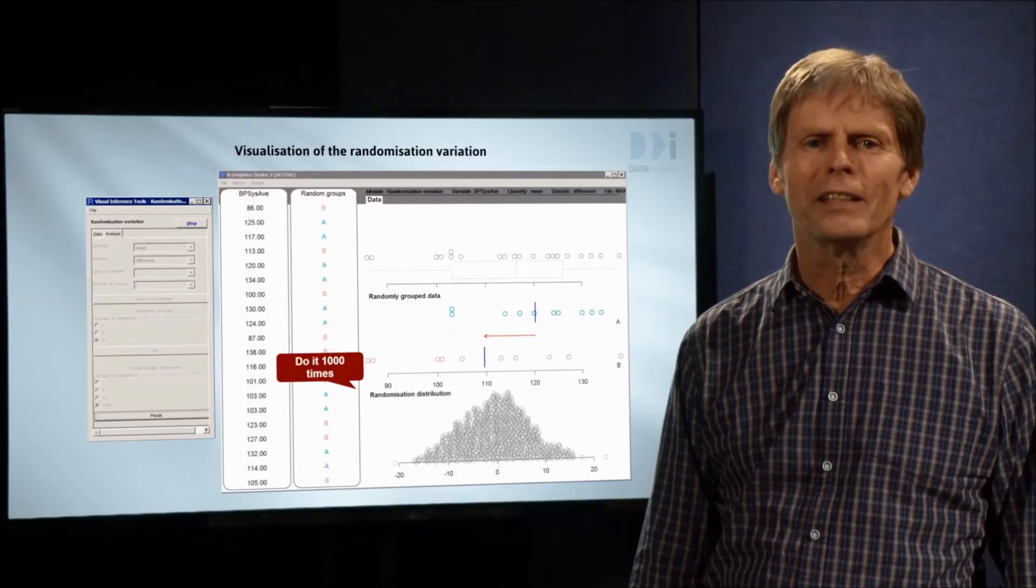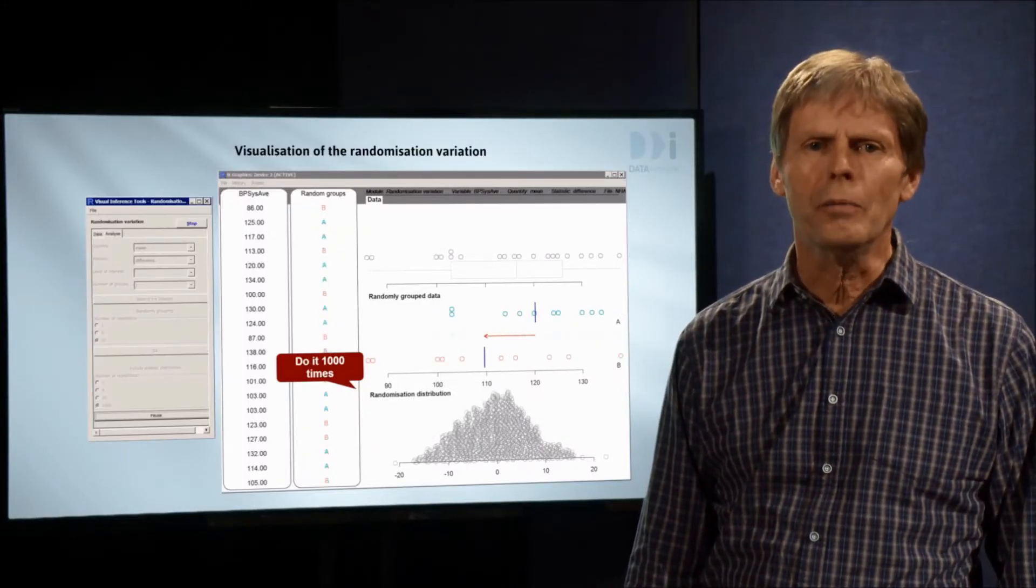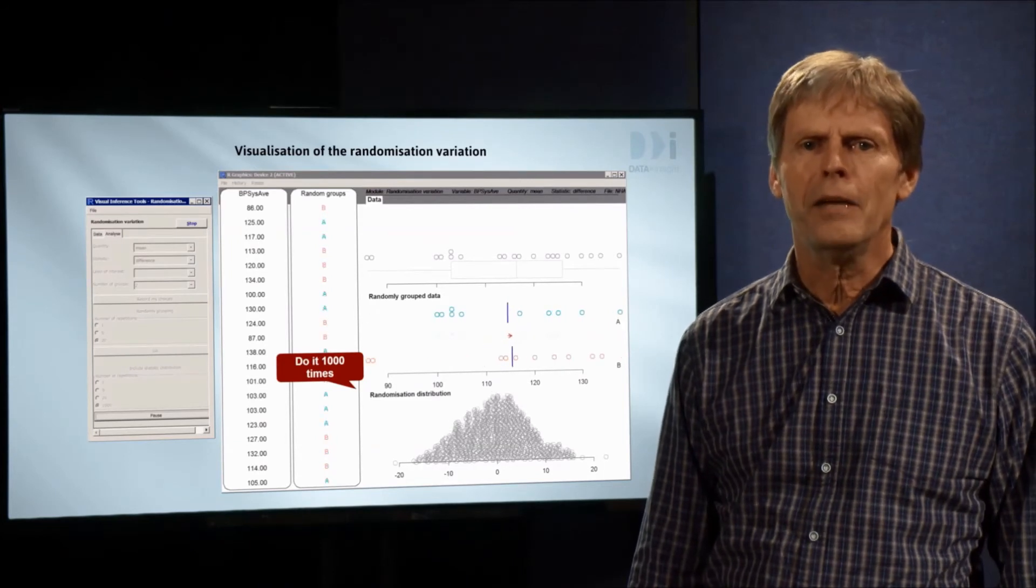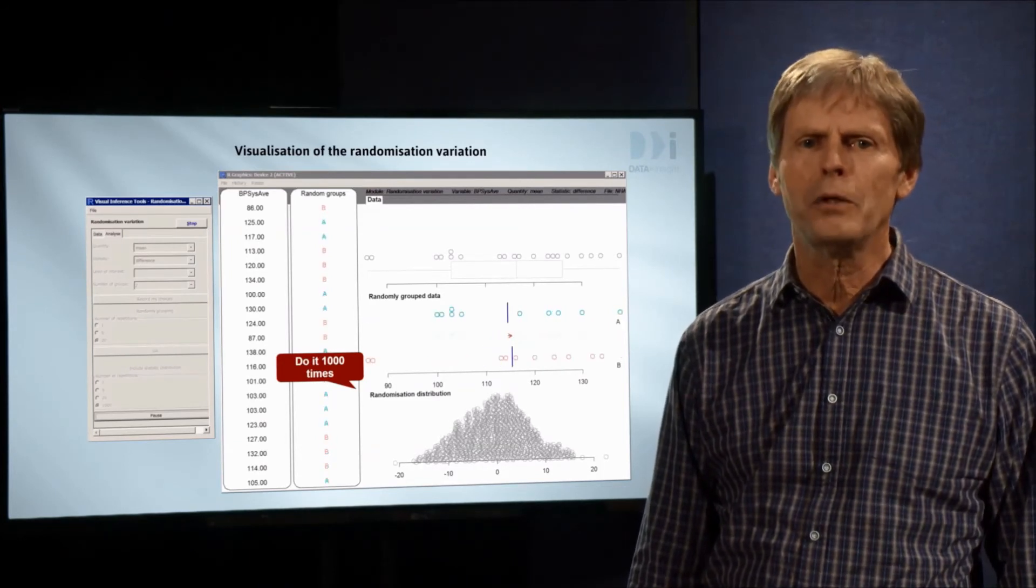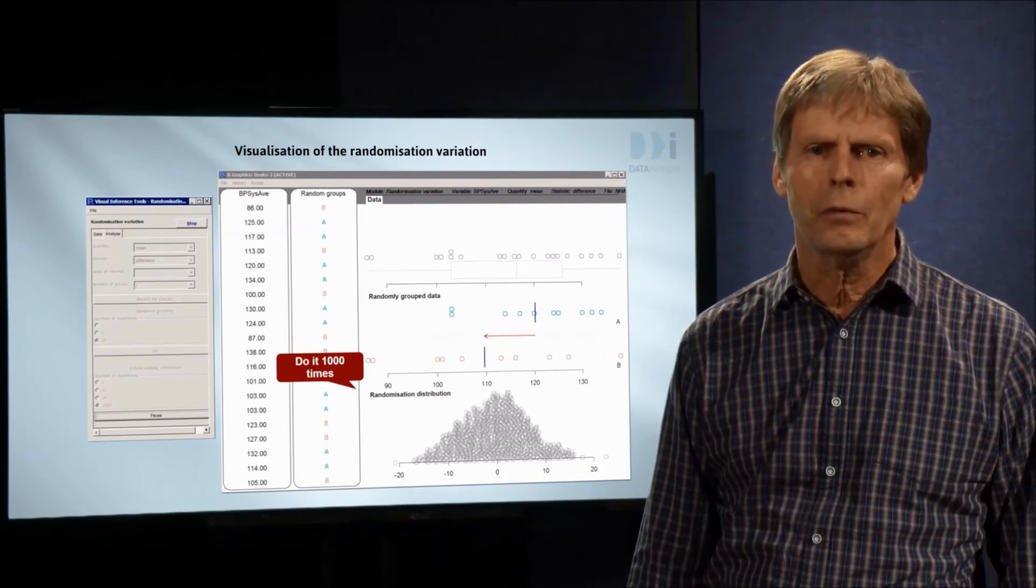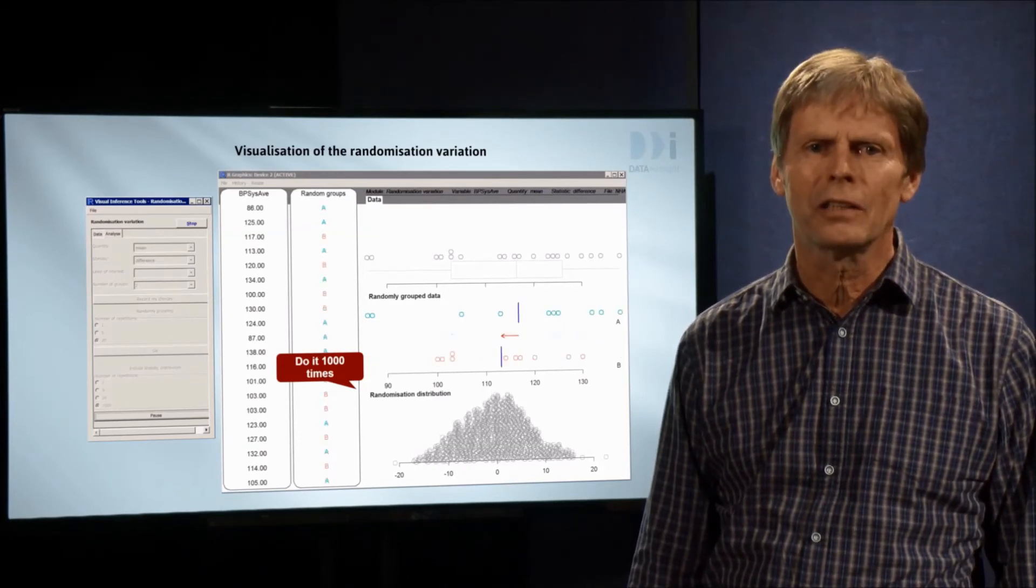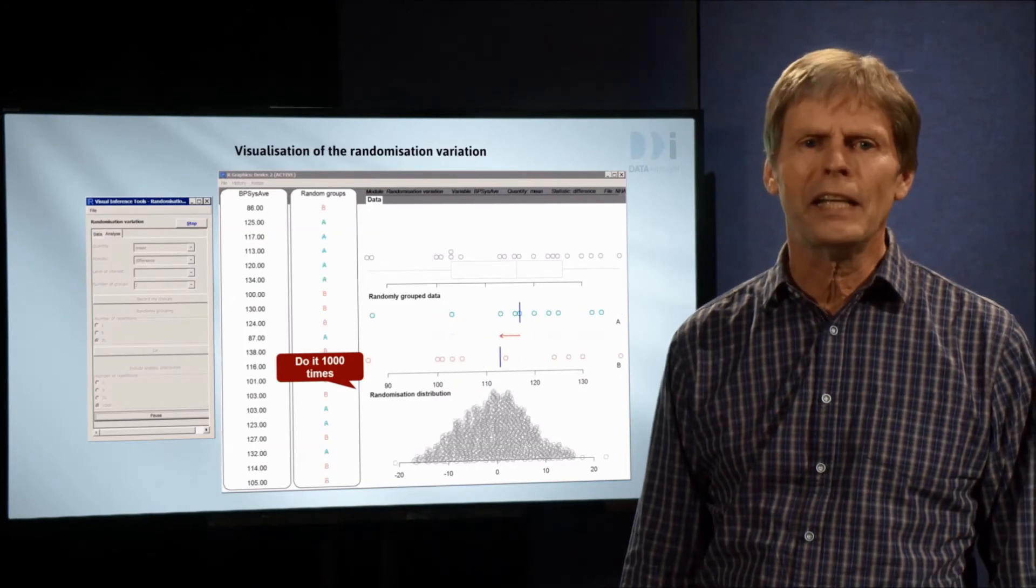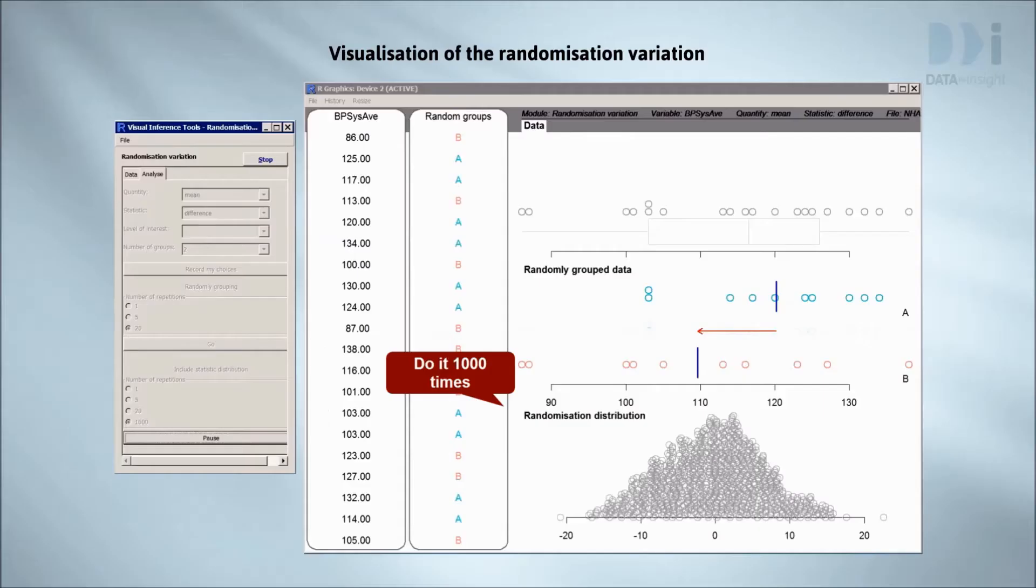What's the moral of all of this? Random assignment to groups, acting on its own, can produce quite large differences between group centers. There were no treatment differences here. It was random assignment and nothing else. Let's go back to the statement from the setup scenario. If the drug is effective in lowering blood pressures, we'd expect the drug-treated group to have lower blood pressures on average than the control group. So far, so good.